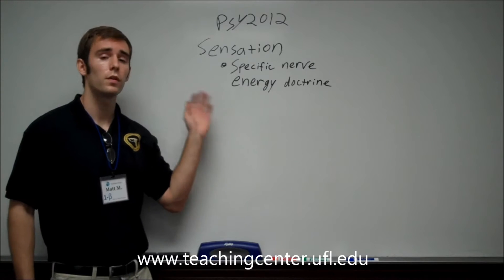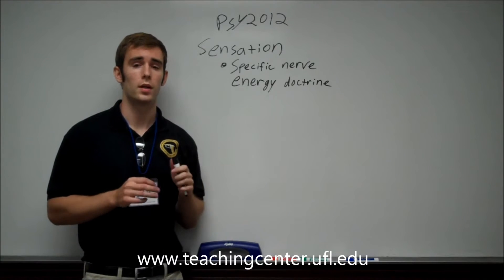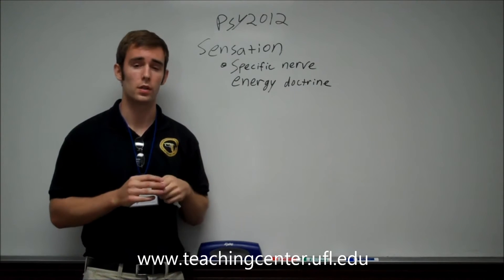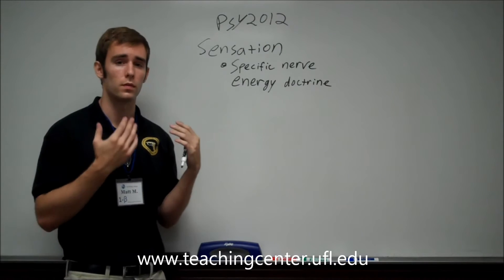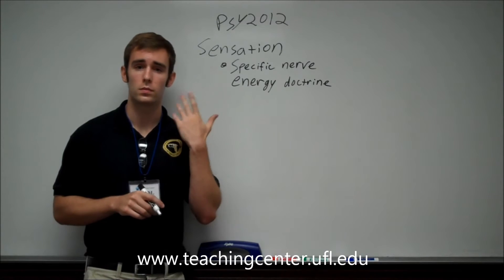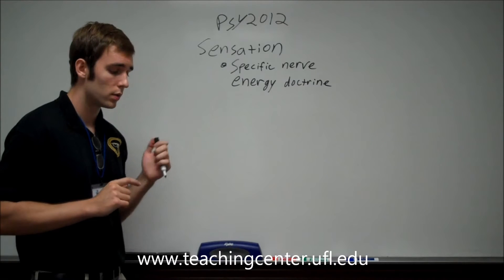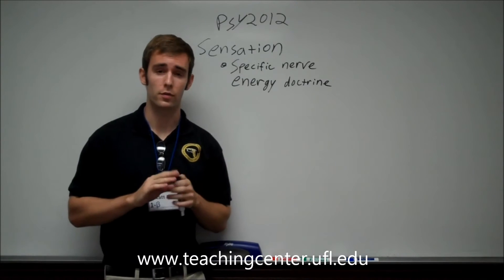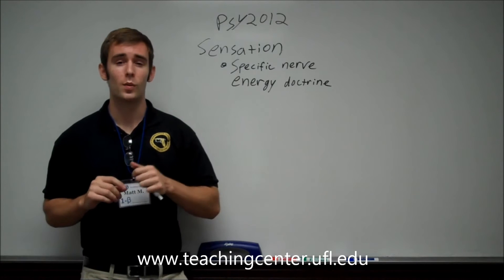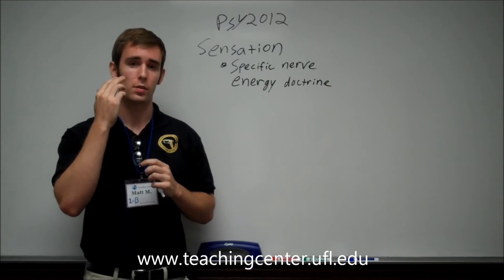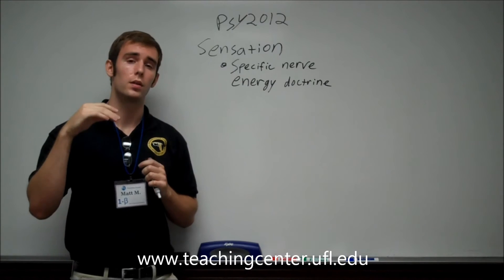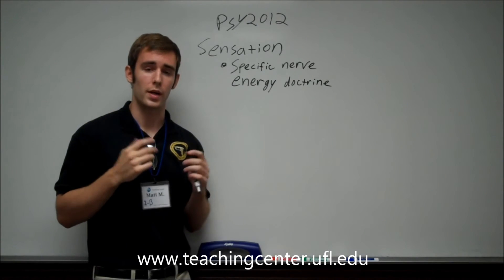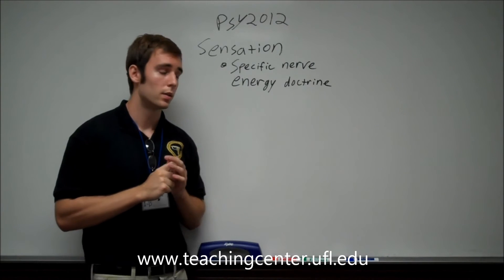With regard to sensation, the specific nerve energy doctrine deals with the way that a sensory organ has a certain neural connection associated with it. So the optic nerve is associated with the visual system, the auditory nerve is associated with hearing, and so on. The book gives the example that if you press your hand up against your closed eye, you'll see spots or lights or something. Basically what's happening is that the stimulation is causing a signal to go down the optic nerve to the brain, and that signal is being sent down that pathway.